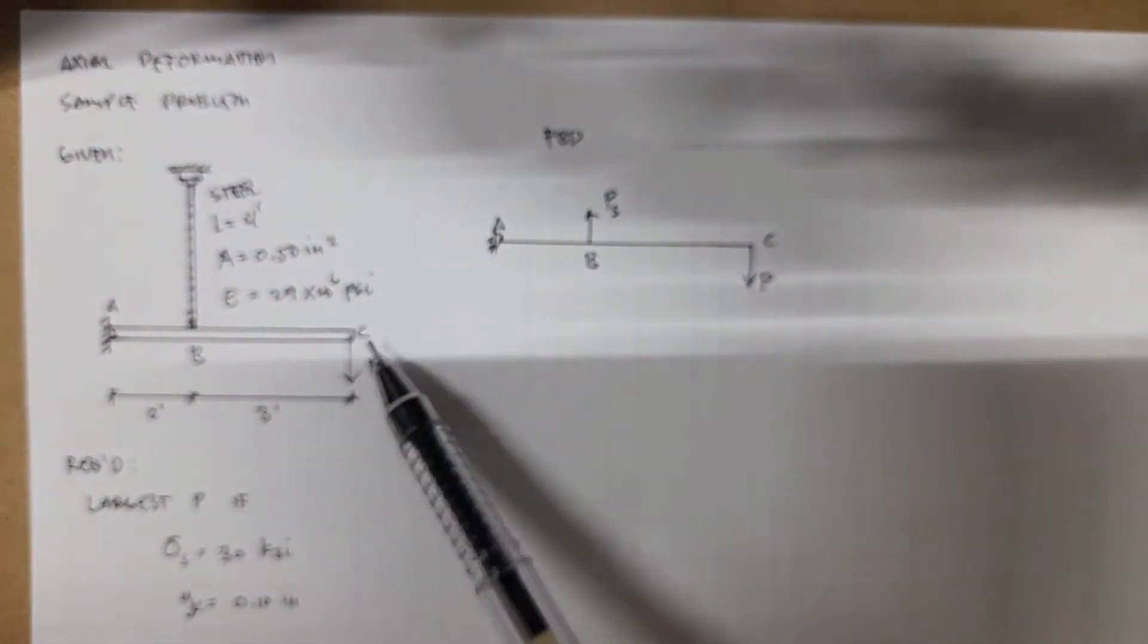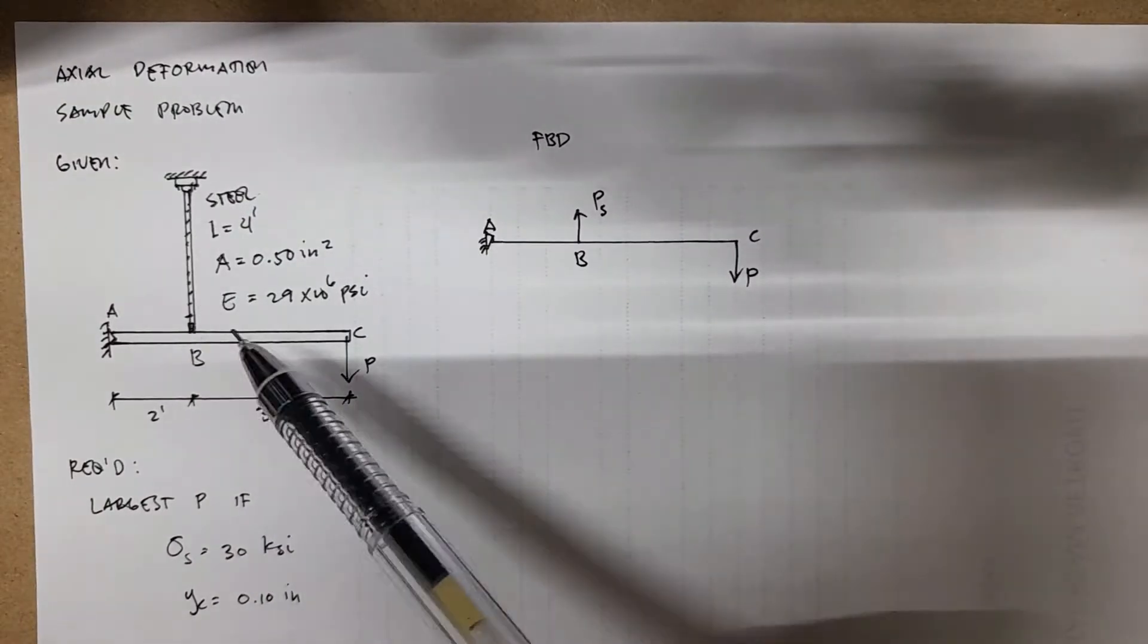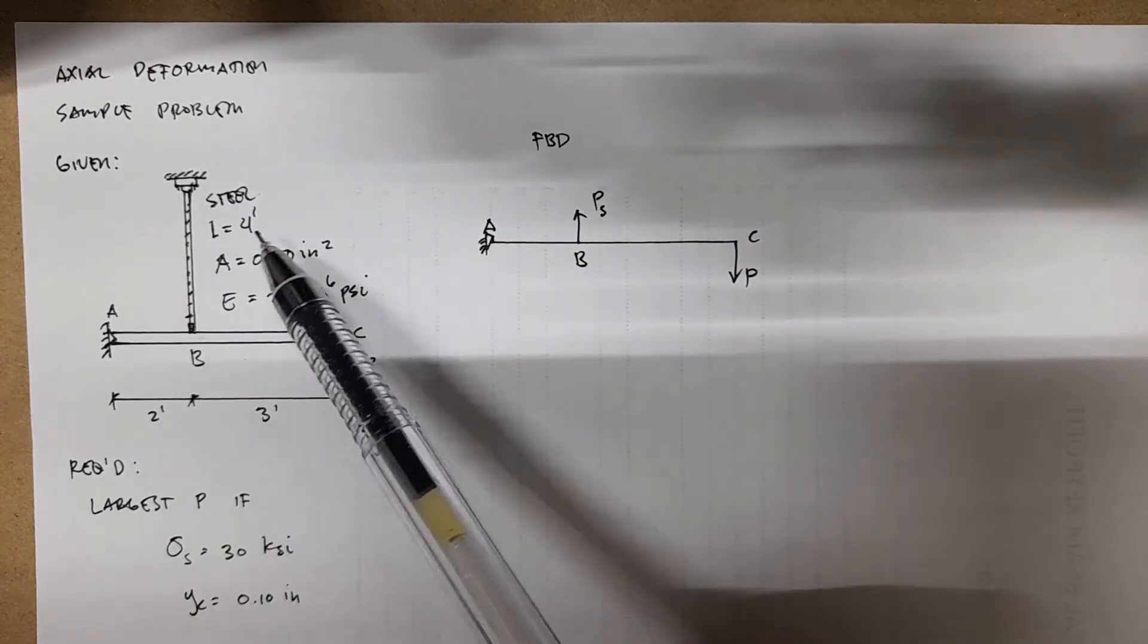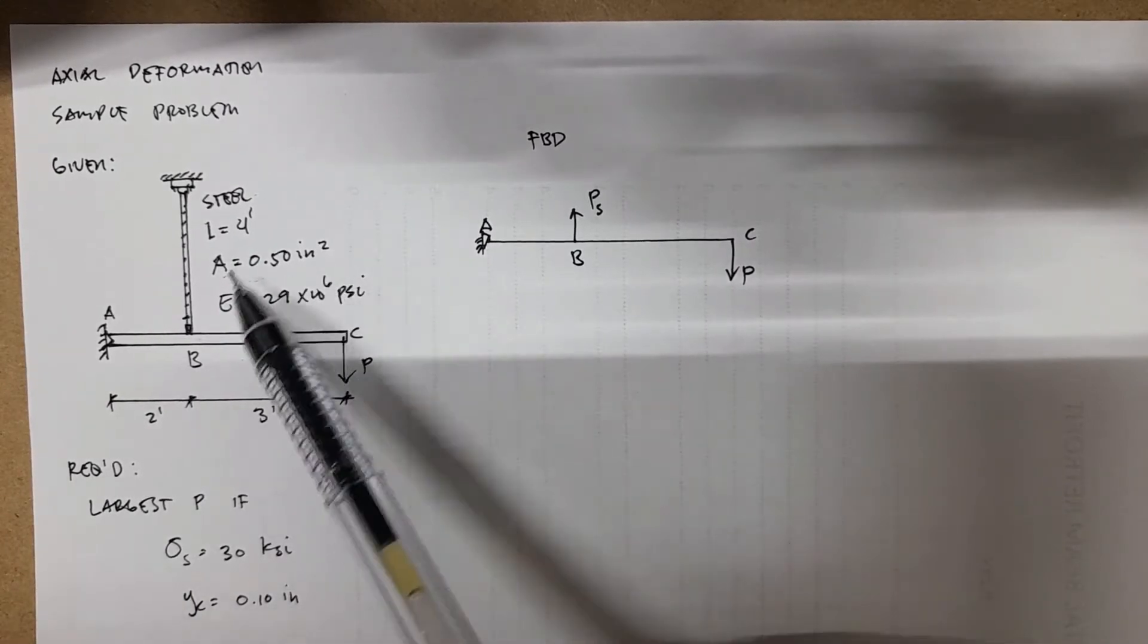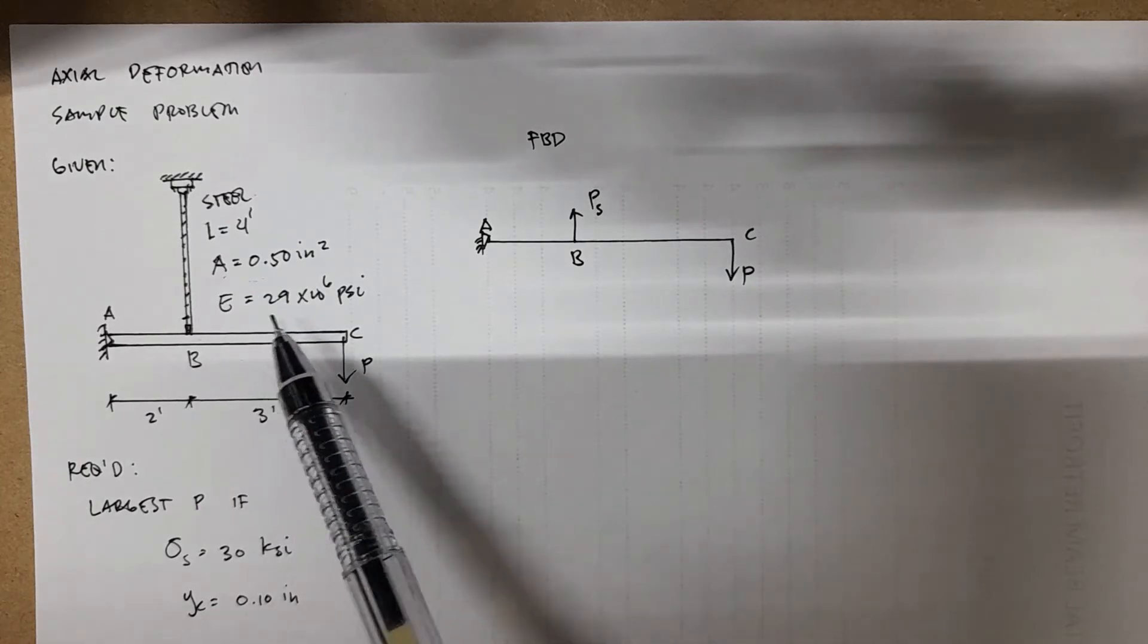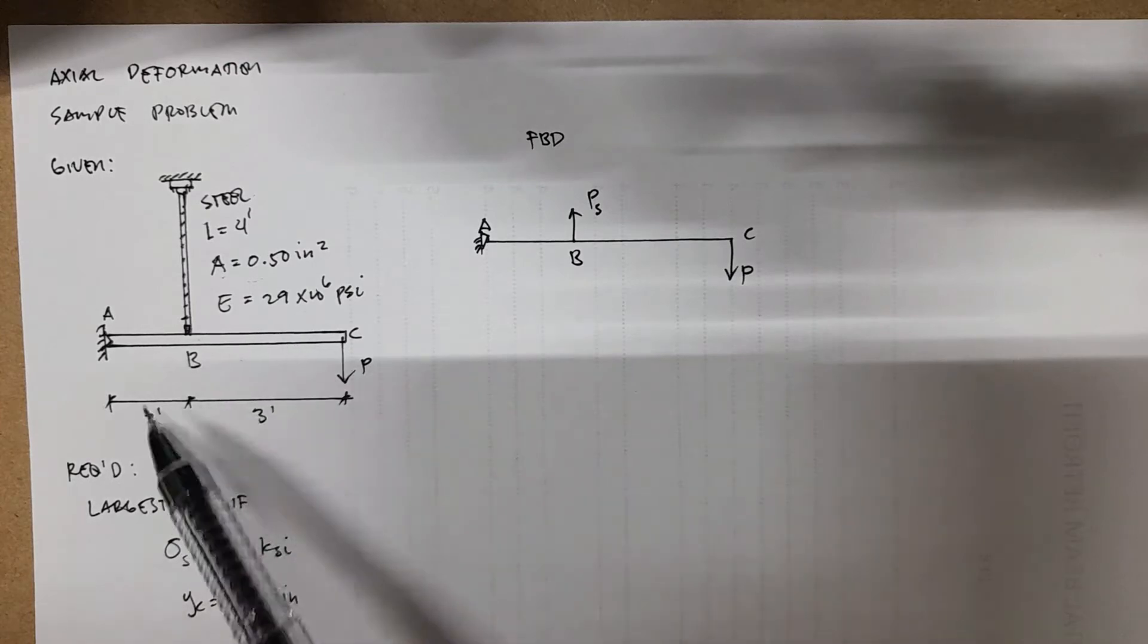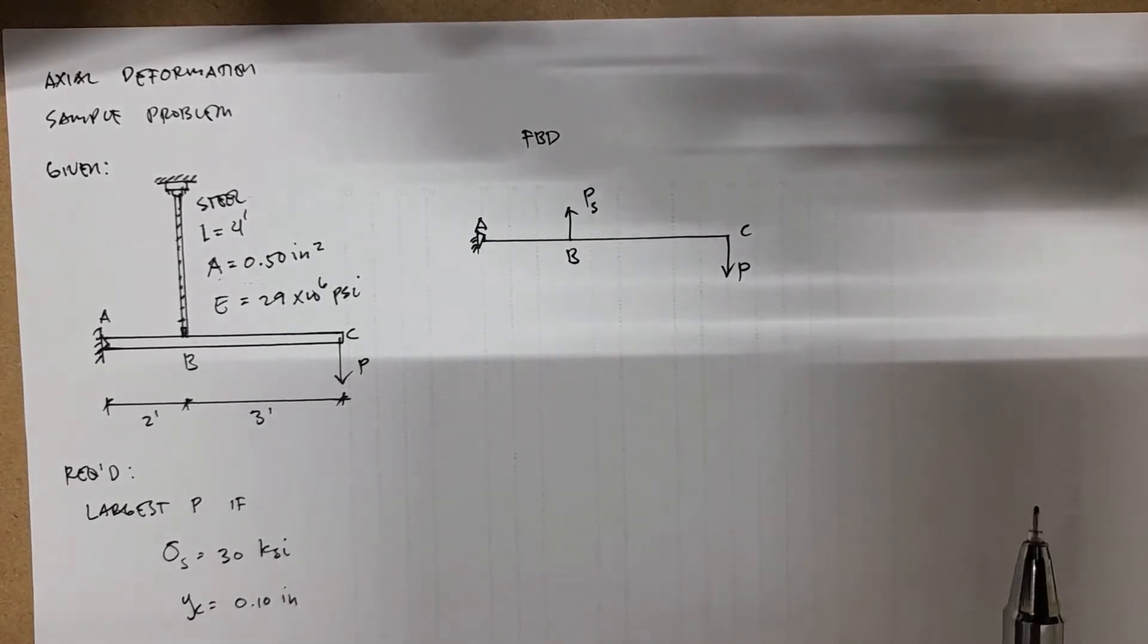Given here, we have a rigid bar ABC which is supported at A by pin connection and supported at B by a steel rod. Given dimensions: the steel is 4 feet long, cross-sectional area is 0.5 inches squared, modulus of elasticity for steel is 29 times 10 to the 6 psi, and the dimensions of the rigid bar. The description of the problem is given in the video description below.